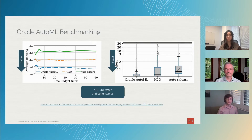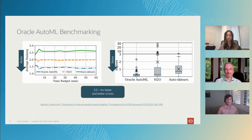On the right, we're showing the quality of the models for the final 60-minute training budget. Again, accuracy is smaller is better, so you can see we're finding better results across the different datasets at 60 minutes. Overall, we're seeing that we're about three and a half to four times faster and finding better scores.